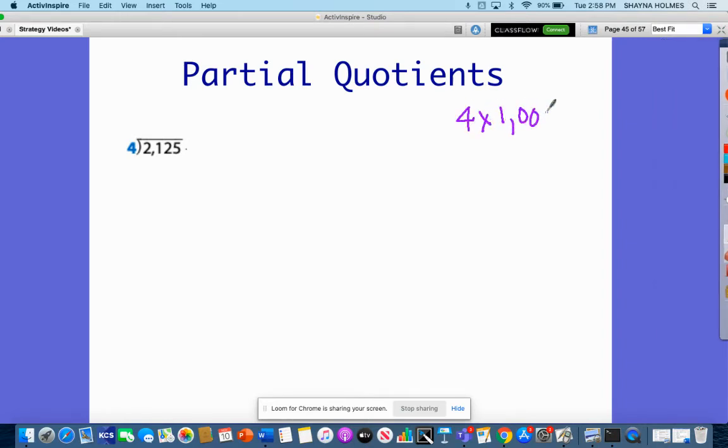So 4 times 1000, 4 times 100, and 4 times 10. Once again for this 1000, just like before in the area model, this is too much because I get 4000, and that is a greater number than our dividend here, which is 2125.